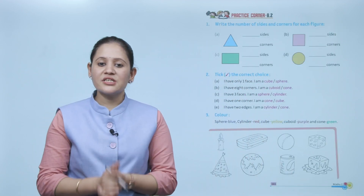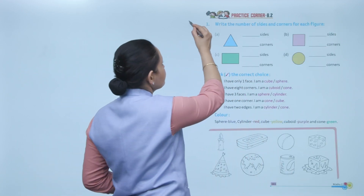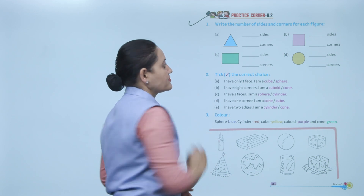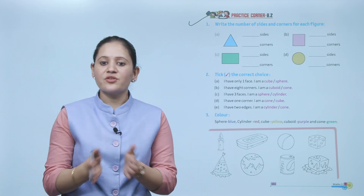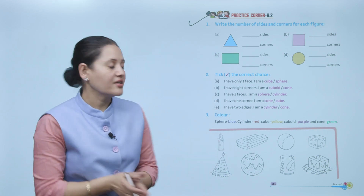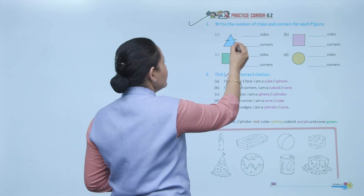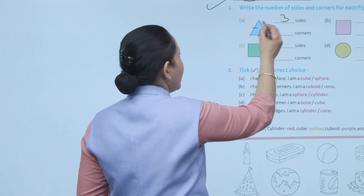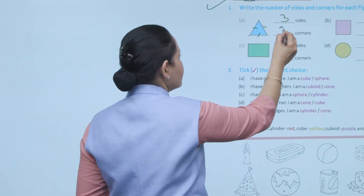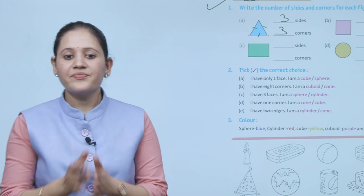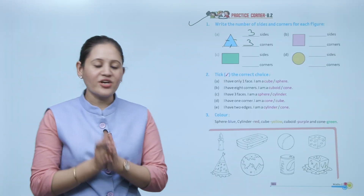Practice corner 8.2: write the number of sides and corners for each figure. Here it is a triangle — it has three sides: one, two, three — and three corners.